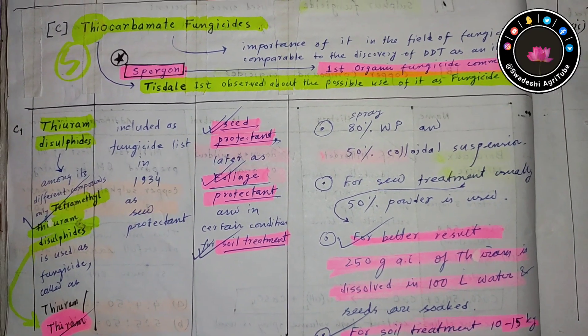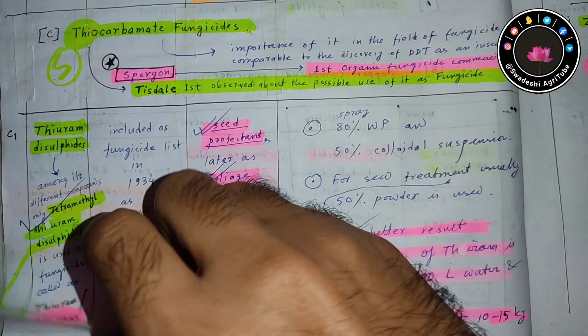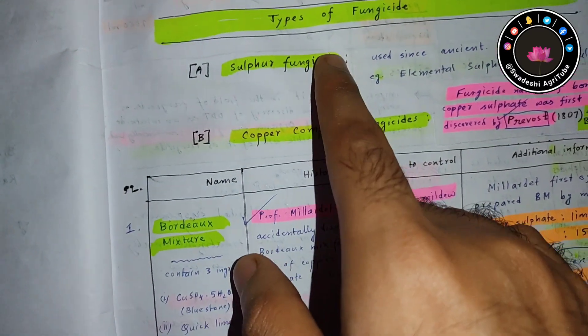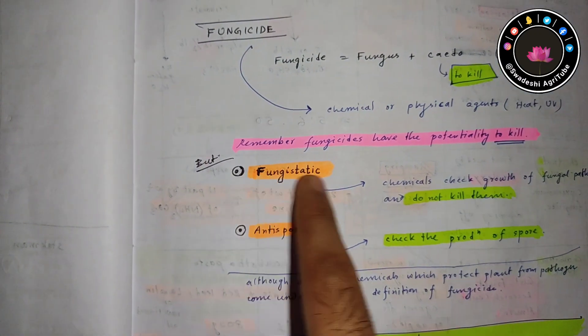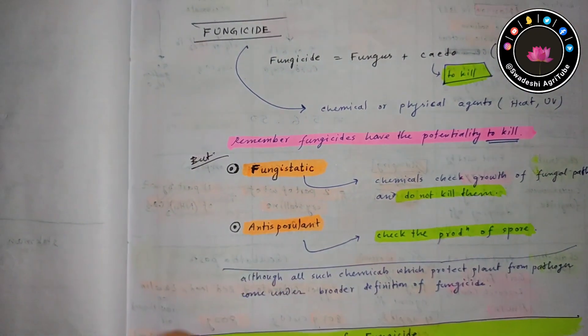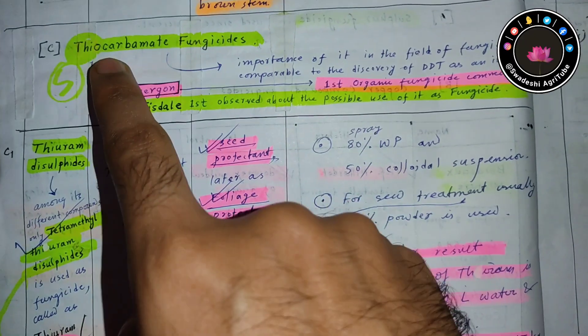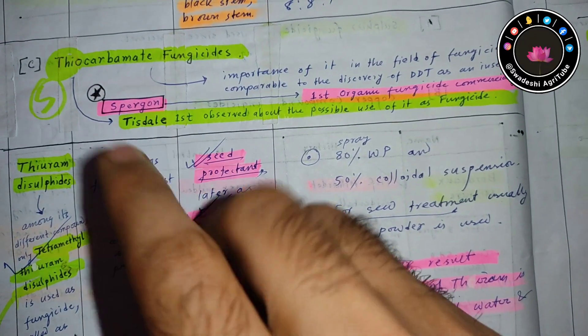This is part two of fungicide classification. In part one we discussed copper compound fungicide, sulfur compound fungicide, and the difference between fungicide, fungistatic, and spirulant. Please visit that video. Today we will talk about thiocarbamate fungicides. In the thiocarbamate fungicide there are three major groups.